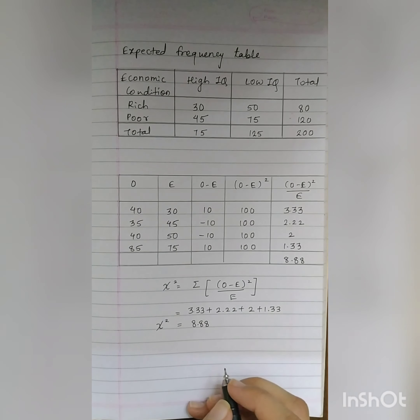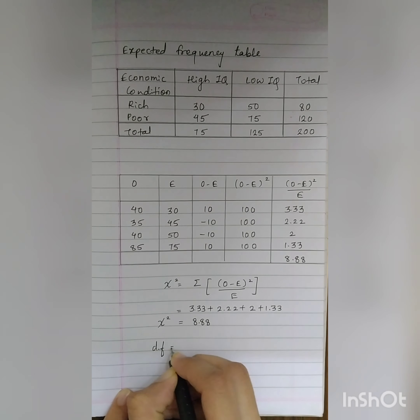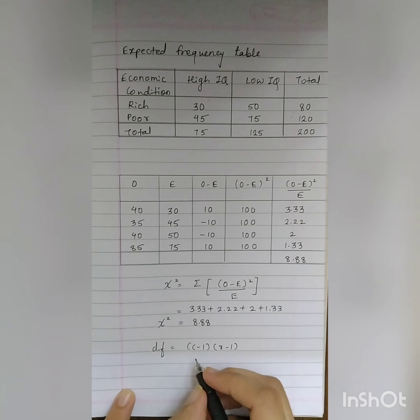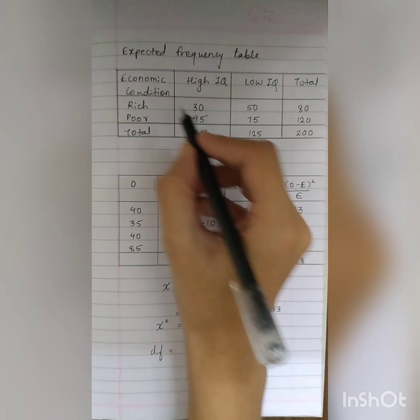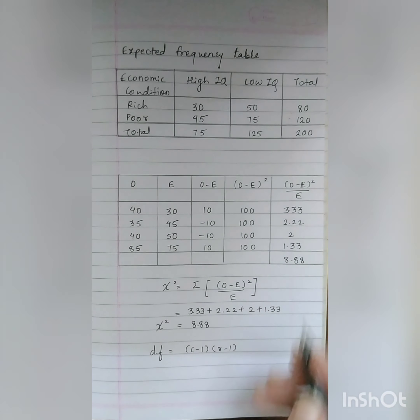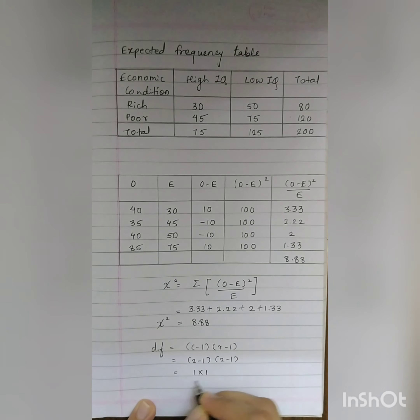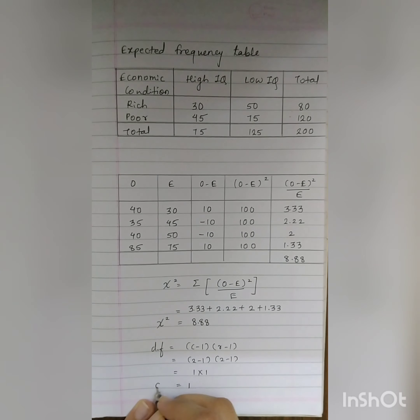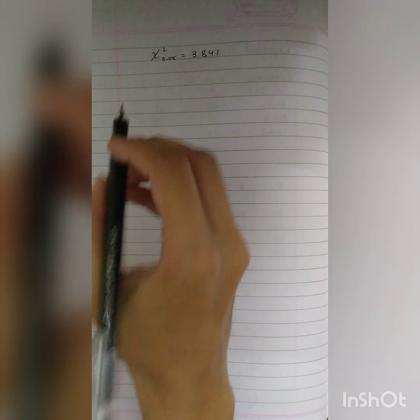Now we find the tabulated chi-square value. To determine it, we first calculate the degrees of freedom. For a chi-square test, degrees of freedom equals (C minus 1) times (R minus 1), where C is the number of columns and R is the number of rows. Here there are 2 columns and 2 rows, so degrees of freedom equals (2 minus 1) times (2 minus 1), which equals 1. For 1 degree of freedom at the 0.05 significance level, the tabulated value is 3.841.